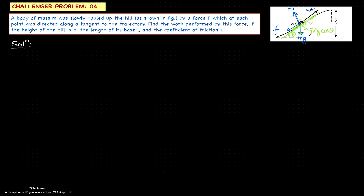At this instant, we can break Mg into two components: one perpendicular to the contact surface and one parallel to the contact surface. The perpendicular component will be Mg cos theta and the parallel component of Mg will be Mg sin theta. Therefore, the normal force equals Mg cos theta, and the friction force can be written as K times N, which equals K times Mg cos theta.